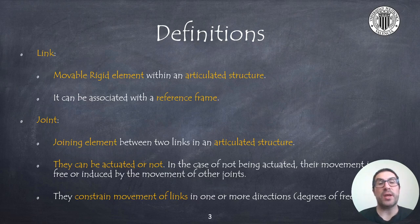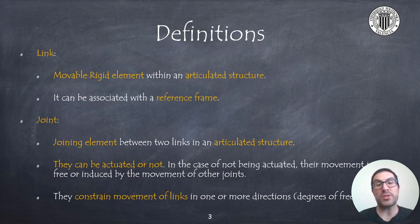On the other hand, a joint is the element that connects two links. Joints can be actuated, but they can also allow free movement, or their movement can be induced by the movement of other joints. In addition to this, joints constrain the movement of links in one or more directions. The amount of directions that they allow are also called degrees of freedom of the joint.